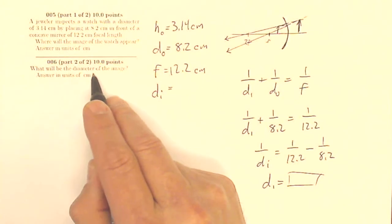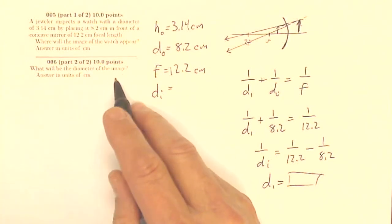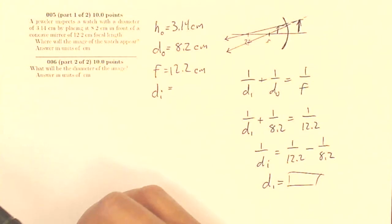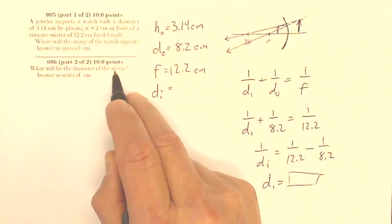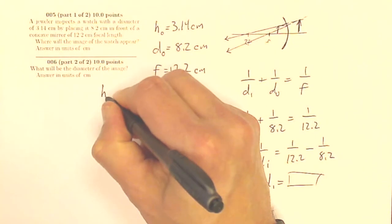What will be the diameter of the image? This isn't like a previous question where I was asking you about f and 2f and the radius and the diameter. Here, the diameter of the image is just the size of the image. So what I'm really looking for is hi.